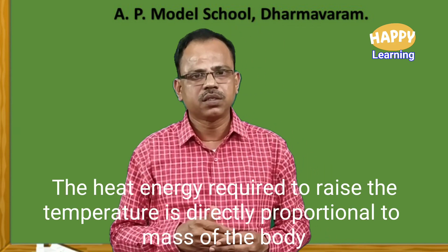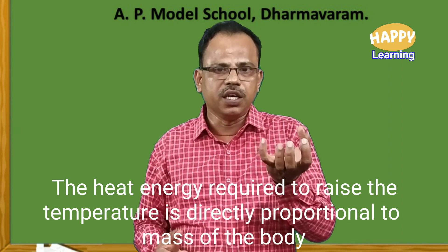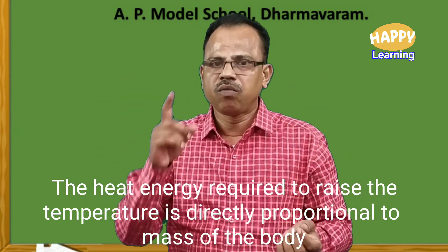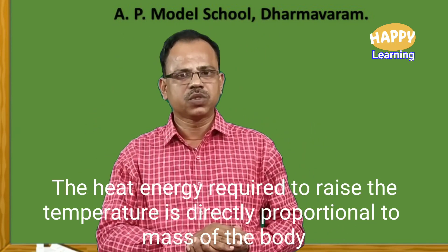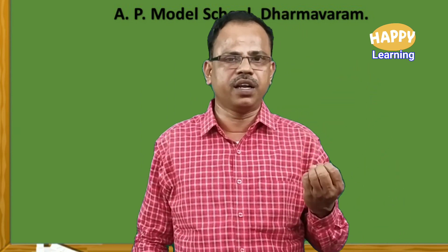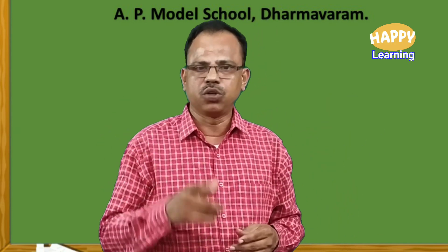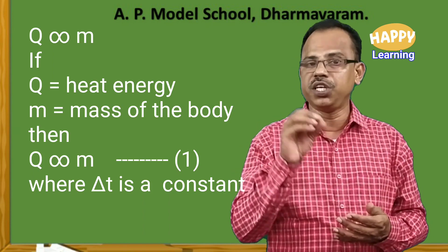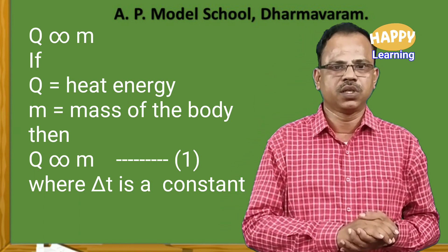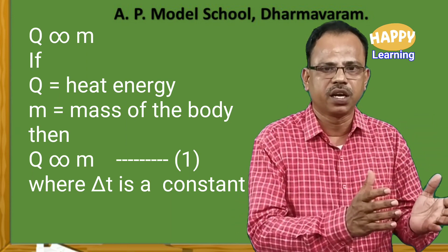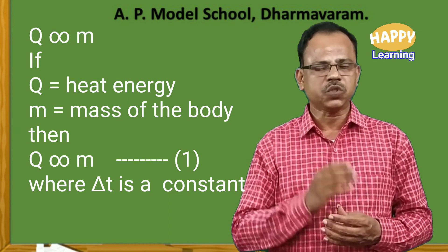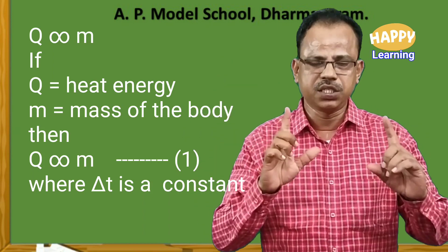From this activity we can conclude that the heat energy required to raise the temperature is directly proportional to the mass of the body — more the mass, more the heat energy required for the same rise of temperature. So for the same rise of temperature delta T, more heat energy is required for a body having more mass. You can write: Q is directly proportional to M, where Q is heat energy required, M is mass of the object, and delta T is constant. This is equation number 1.